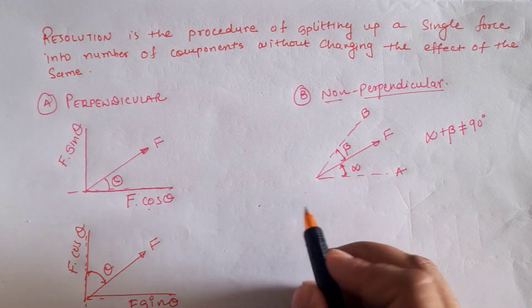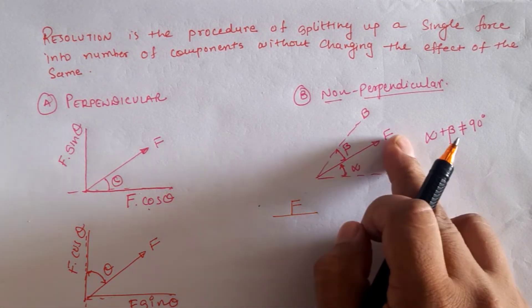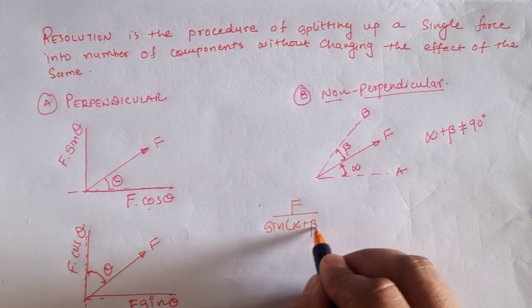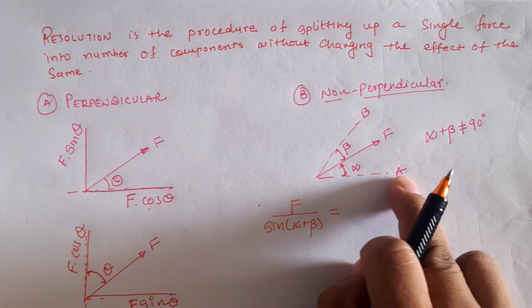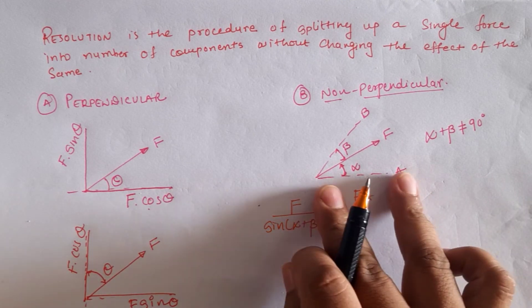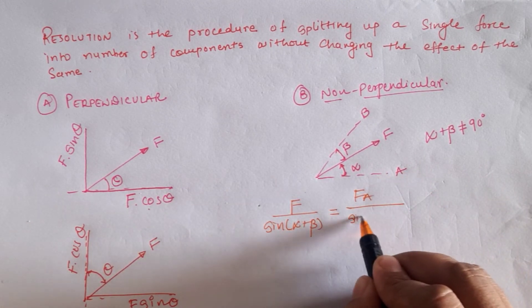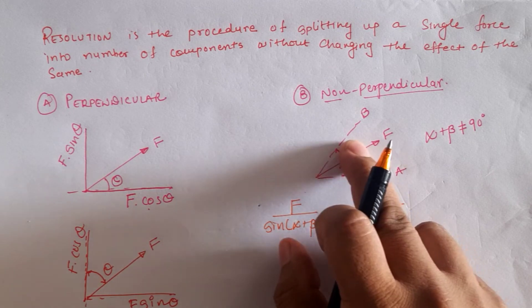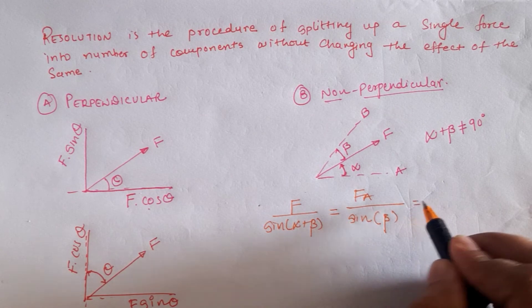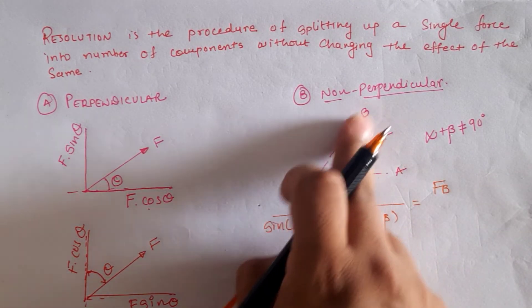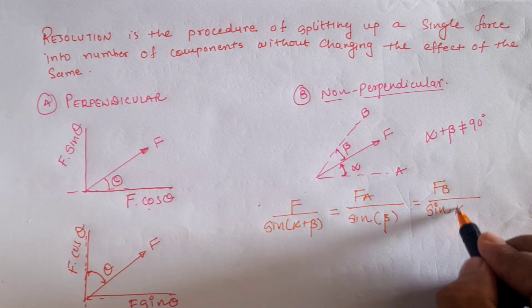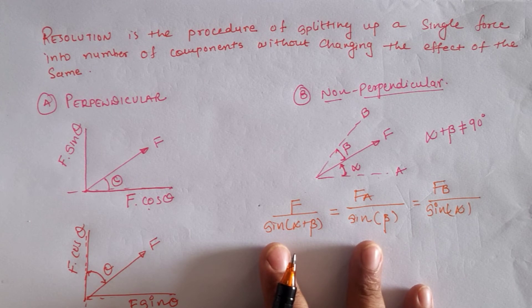For non-perpendicular resolution, the equation is: F divided by sin(alpha + beta) equals the force along axis A divided by sin beta, and the force along axis B divided by sin alpha. This is applied when resolving a force along two non-perpendicular axes.